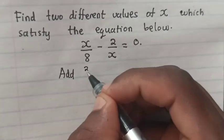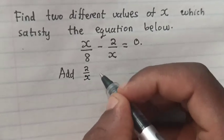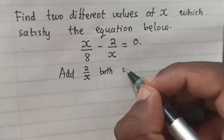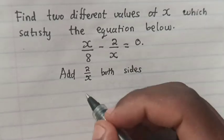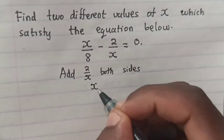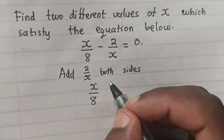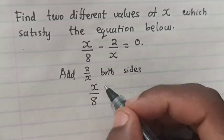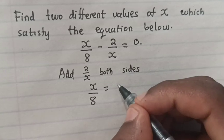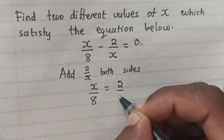From our equation, we add 2 over x to both sides. So it will be x over 8 is equal to 2 over x.